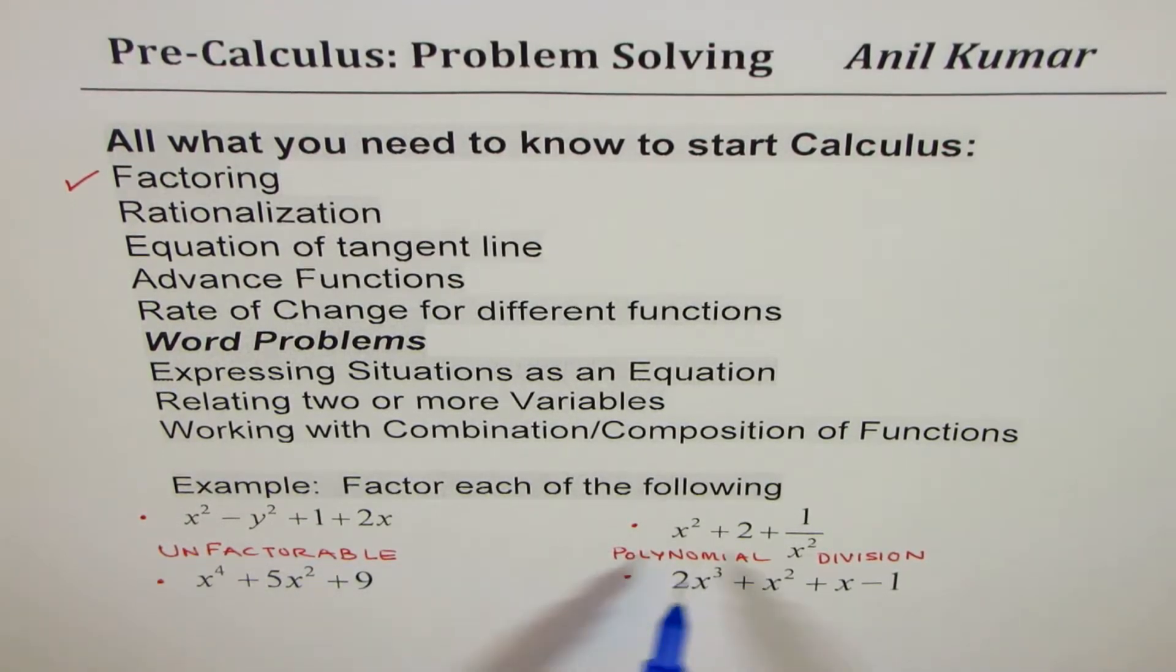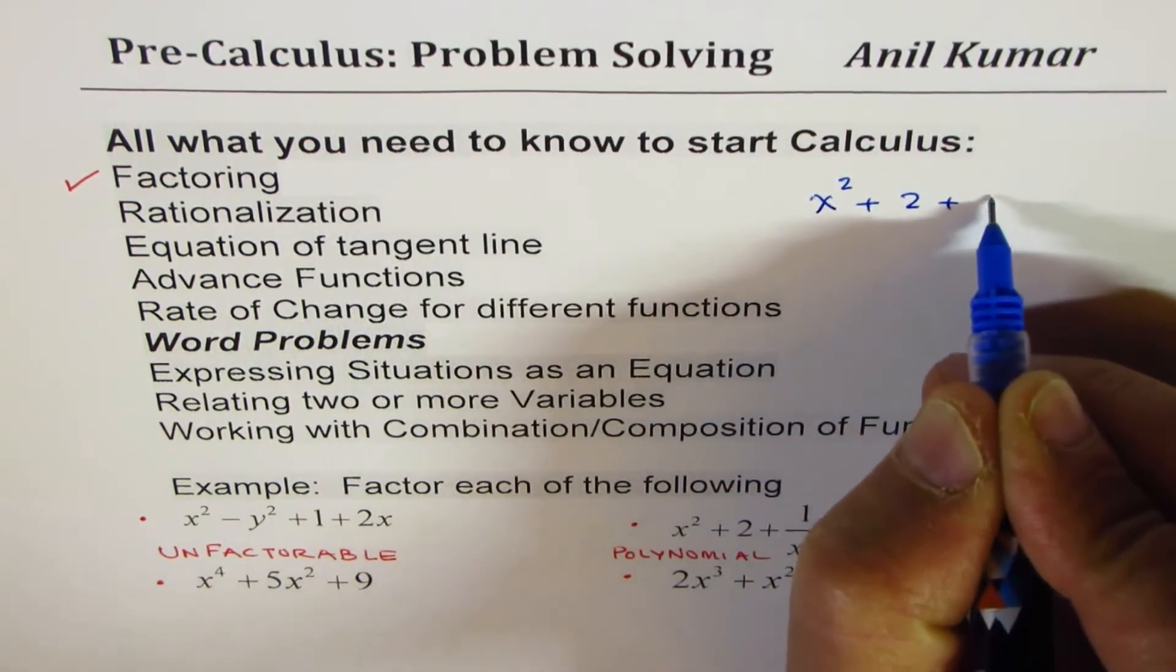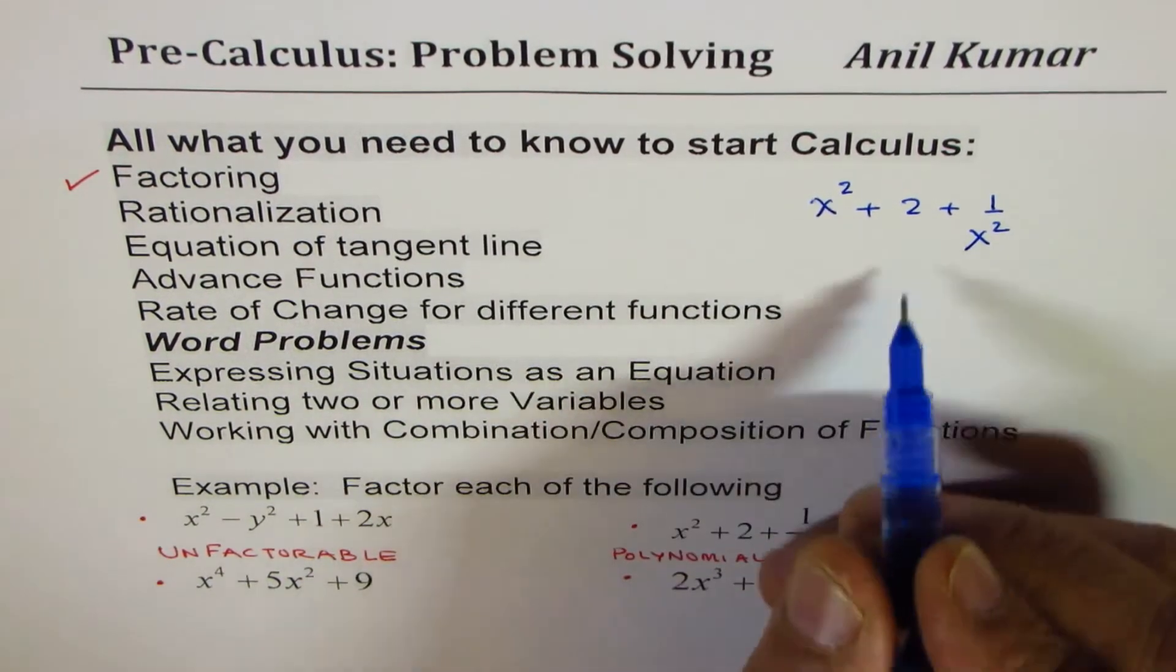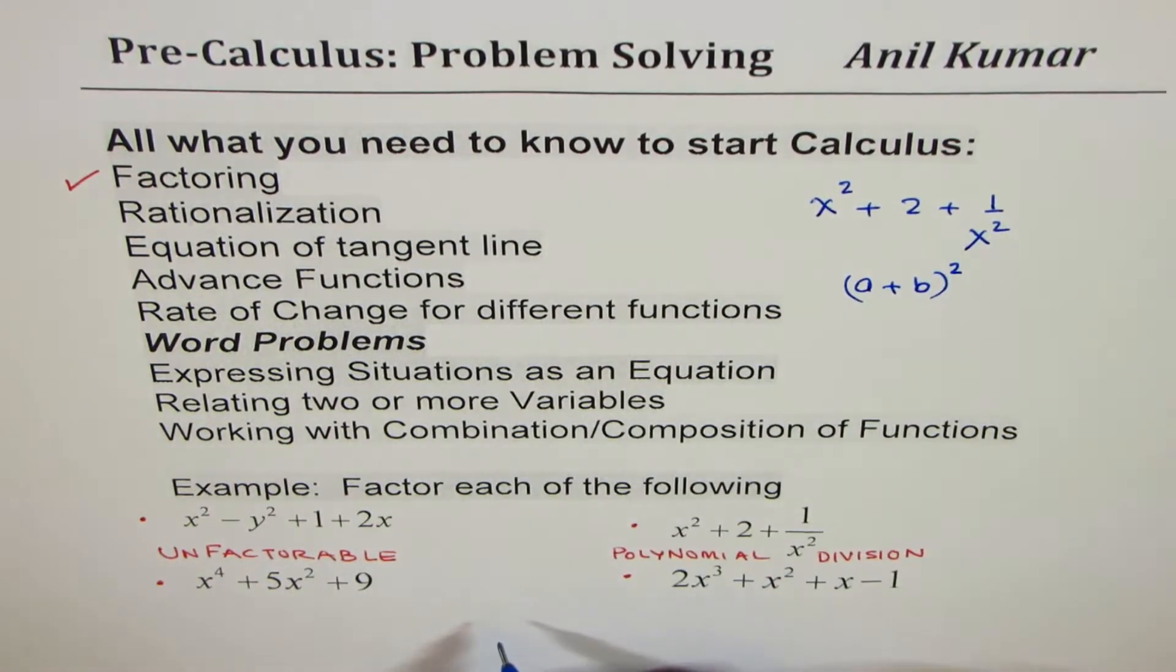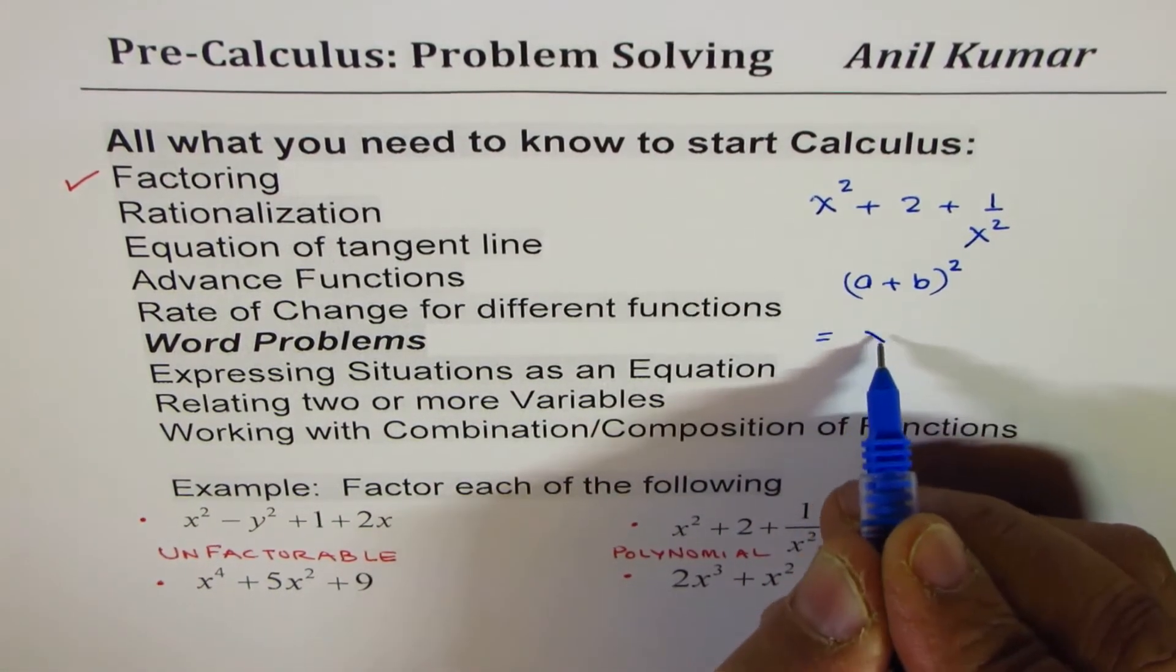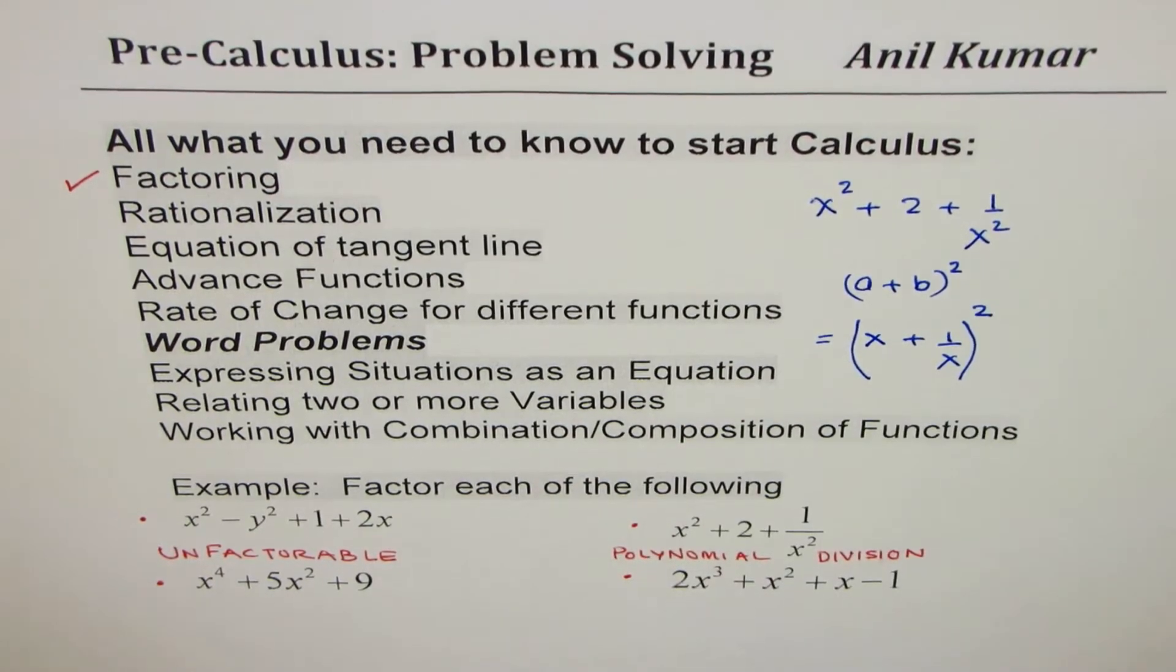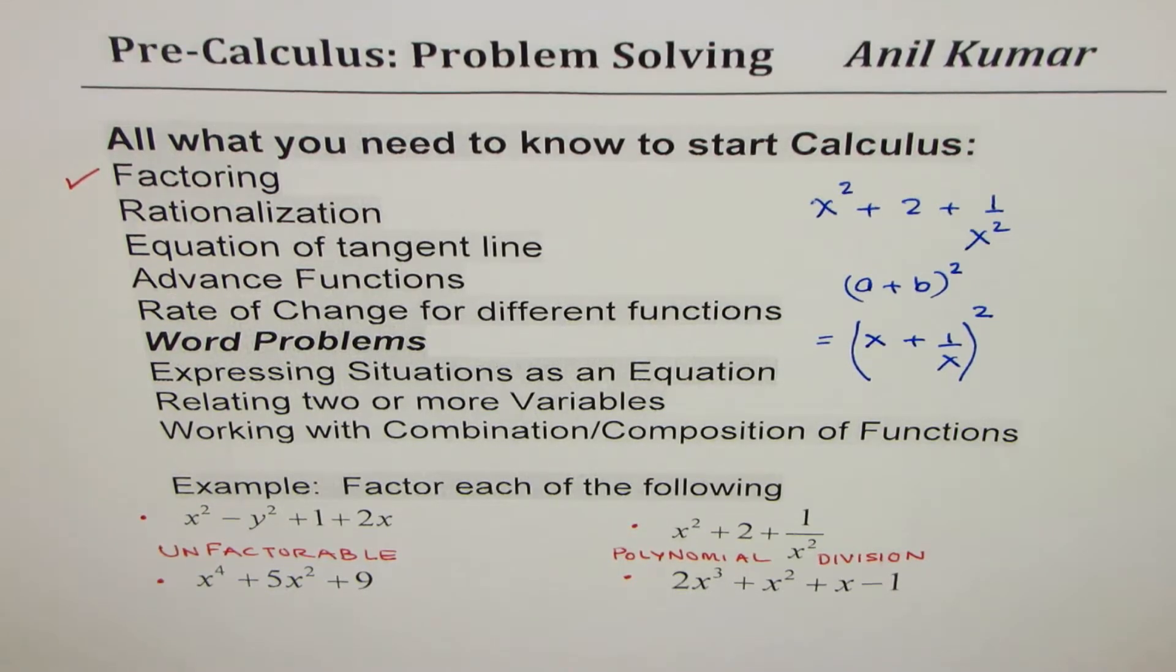Now let me do the first one which is this one here, which is very simple: x² + 2 + 1/x². It looks difficult but I hope you remember the formula (a + b)² - it could be applied directly. Think about it. You could write this as (x + 1/x)². So sometimes the questions could be tricky but easy. So you may have to look at a problem from different angles and analyze and get to the result. So that's the emphasis of this particular example here.